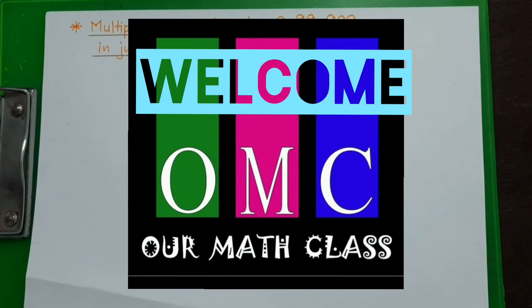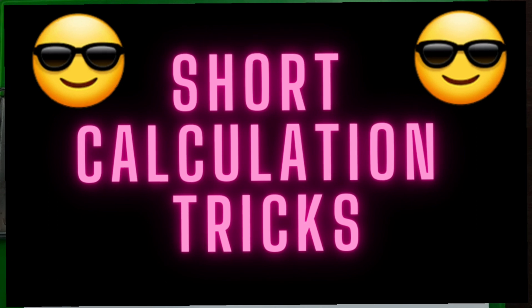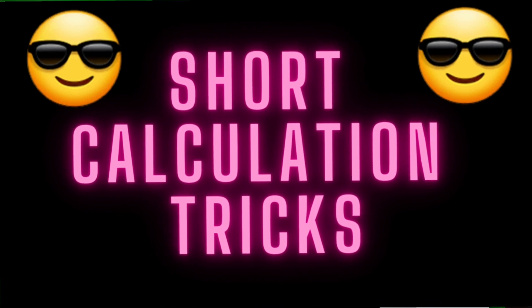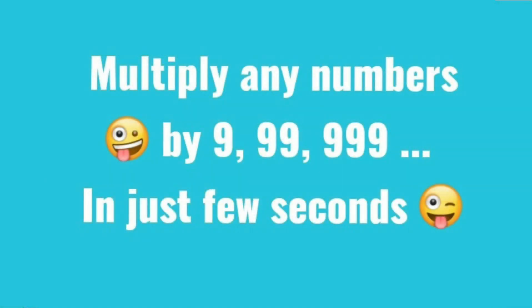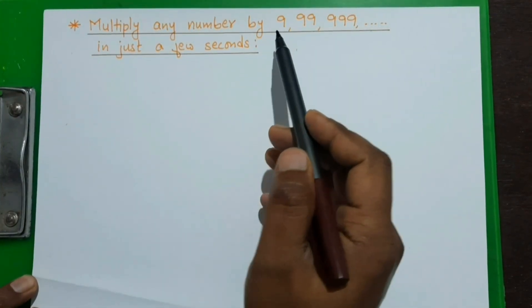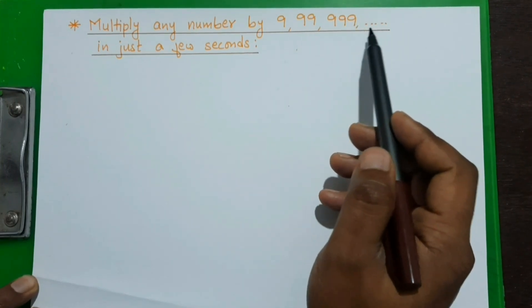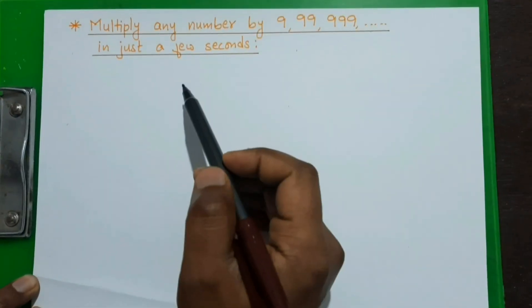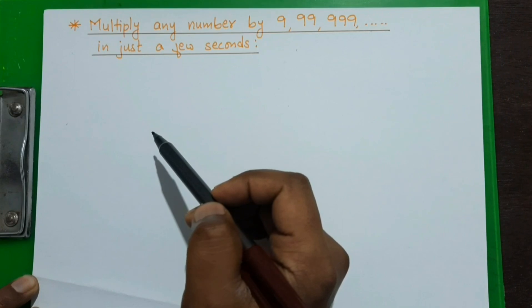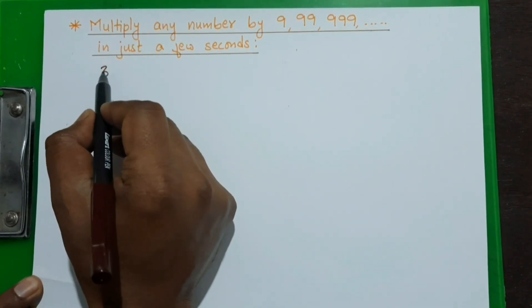Hello everyone, welcome to our math class. Here we are going to start a series of short calculation tricks. In the first video of this series, we are going to learn to multiply any number by 9, 99, 999, and so on in just a few seconds.